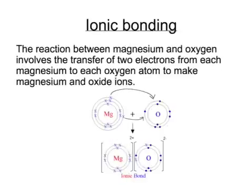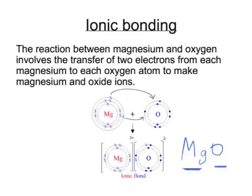If we have an atom wanting to lose two electrons, it will quite happily react with an atom which wants to gain two electrons in a kind of one-to-one ratio. So, when we get magnesium oxide, the formula of magnesium oxide is MgO, and that indicates a ratio of one magnesium to one oxygen. This would form a strong ionic bond between the two ions, and this bond would be even stronger than the one in sodium chloride because we've got an attraction between a doubly positive and a doubly negative ion.